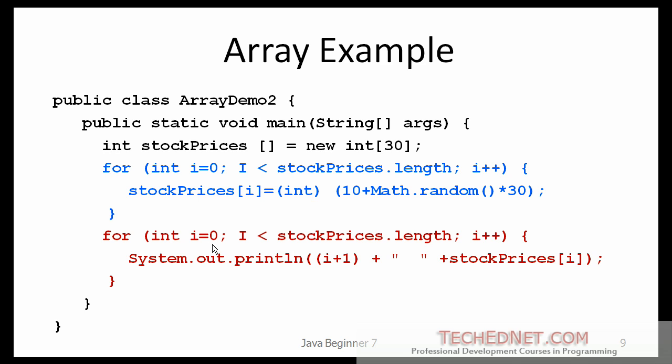You always start at 0 because the first element has an index of 0 and the last element has an index of length minus 1. This will print all 30 stock prices stored in that array.